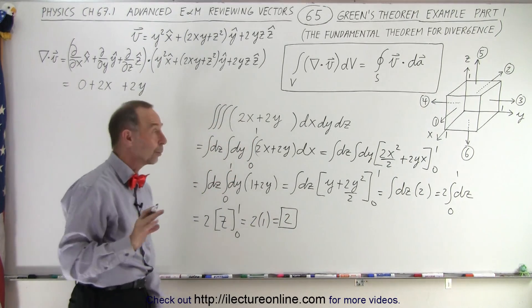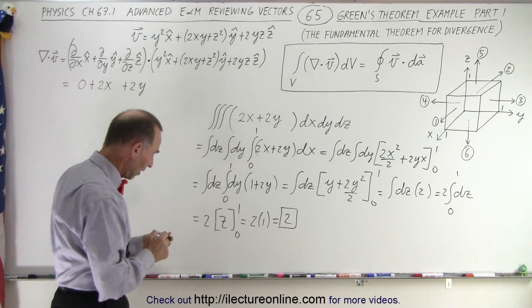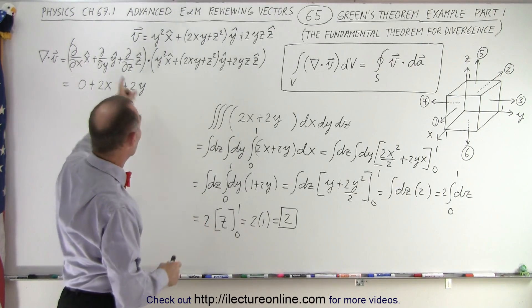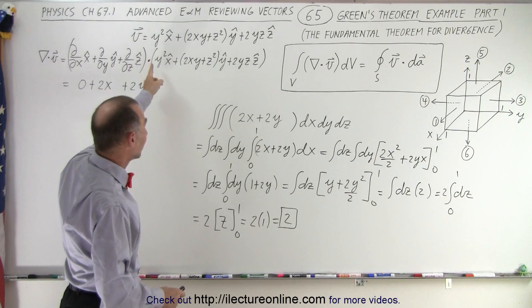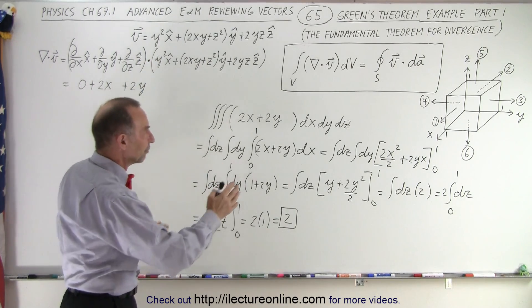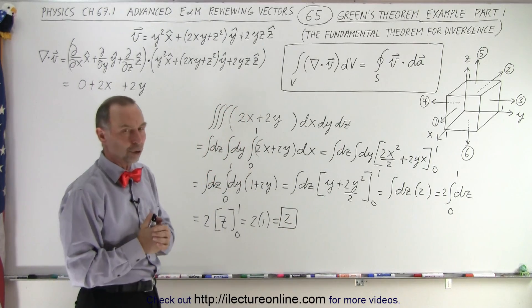So here you can see that if we work out the left side of that equation of Green's theorem, the value for this particular vector field, if we take that, we take the divergence of that and then we integrate that over the volume of the cube, we get a value equal to 2.